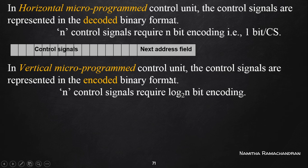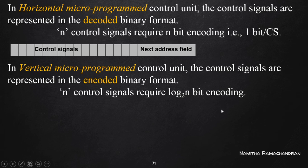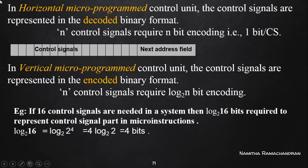In the case of vertical micro instructions, control signals are represented in encoded binary format. The n control signals require only log₂(n) bits. For example, suppose the system needs to represent a total of 16 control signals. In the horizontal case, we need 16 bits in the control signal field. In the vertical case, we need only log₂(16) bits.